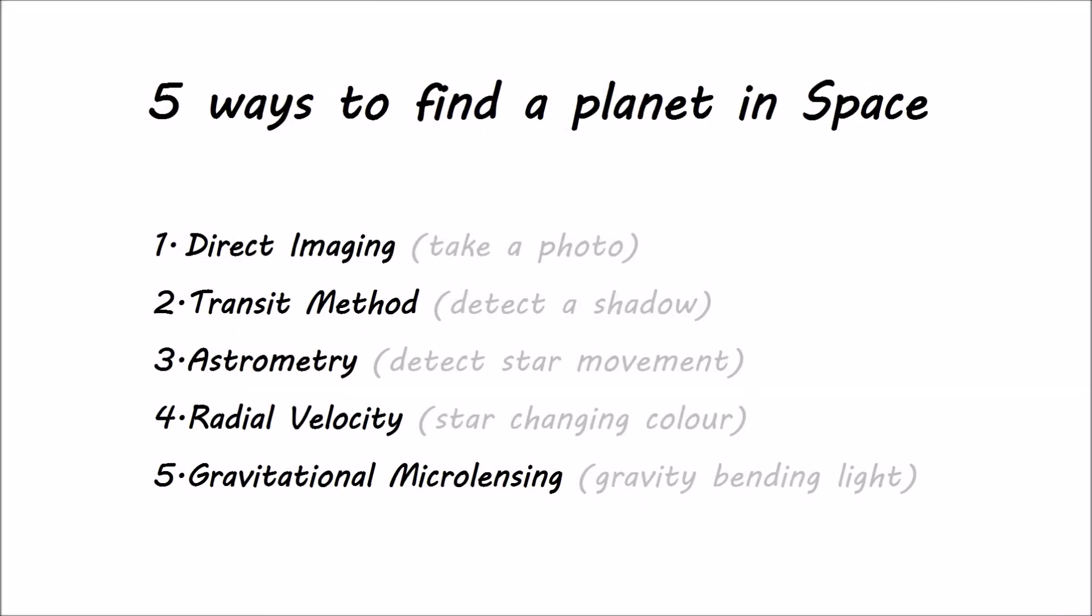So, here they are. Five ways to find a new planet outside of our solar system. Nowadays, astronomers are discovering hundreds of new planets every year. Who knows? Maybe life exists on one of them.